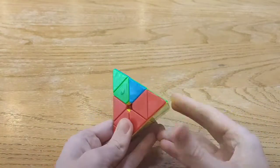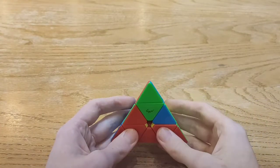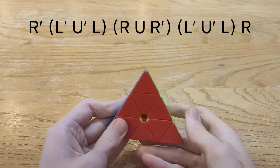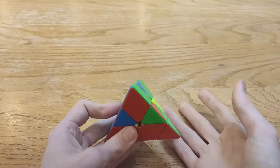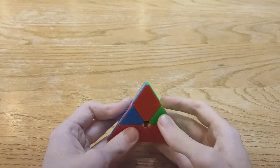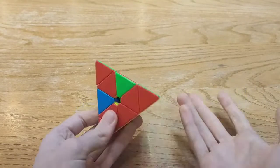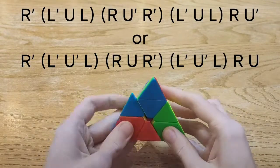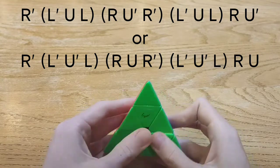If instead you have to do a U prime AUF then what you're going to do is like that. And if there's no AUF to do then once again we're just going to do one of those two algorithms and then do whatever AUF you have to do at the end.